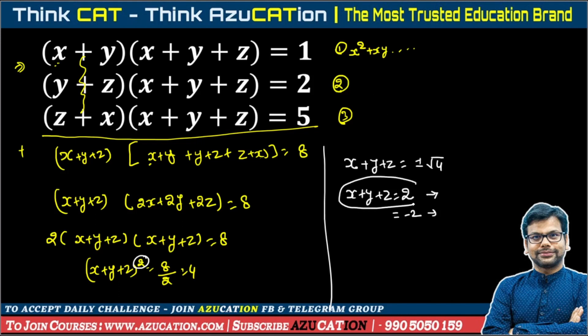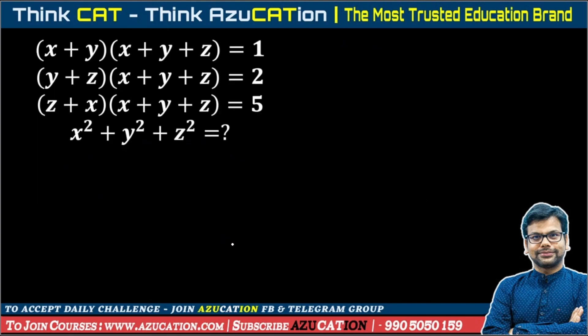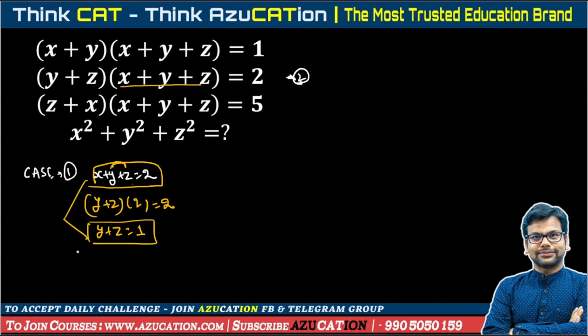But what do we have to do? We have to solve the question with both cases because in the final case we could have different answers. So let's solve this question with both the cases. Case 1: assume x plus y plus z is equal to 2. In equation number 2, if we put x plus y plus z is equal to 2, we get y plus z into 2 is equal to 2. So y plus z is equal to 1. Since we know x plus y plus z is 2 and y plus z is 1, from these two we get x is equal to 1.